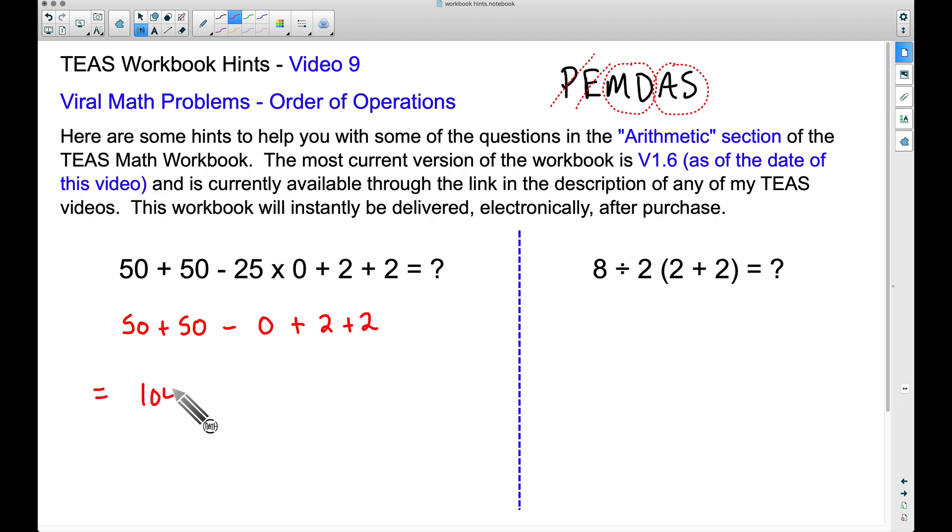Now here comes the big one: 8 ÷ 2 and then in parentheses here we have 2 + 2. So if we start this off, I'm going to work inside of the parentheses first. 8 ÷ 2, and inside parentheses we have 4. Here's where people were messing up.